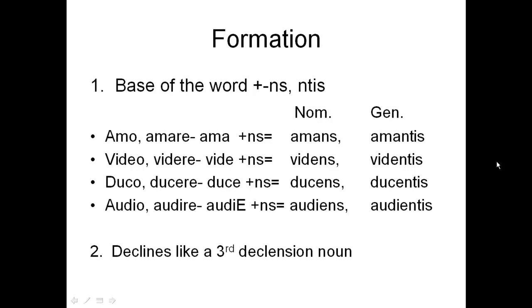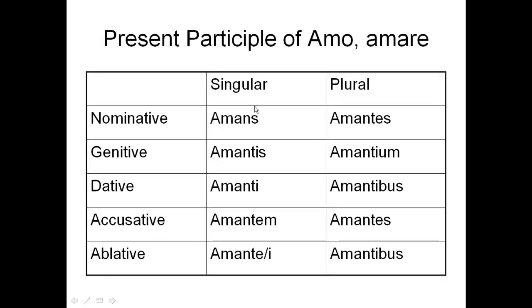Formation of the present participle: all you're going to do is take the base of the word and then add -ns for the nominative and -ntis for the genitive. The only thing that's tricky is for fourth conjugation verbs like 'audio' — you're going to add an 'e' to the base and then add -ns. You can see the nominative forms and the genitive forms here. These are going to decline like a third declension adjective.